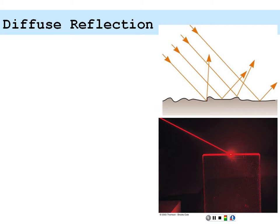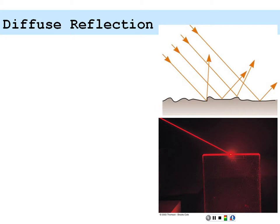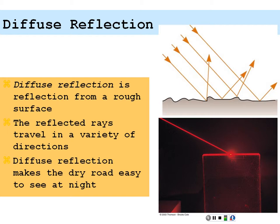If the surface is not smooth — it's kind of rough — the rays come in and reflect, but because of the rough surface the reflected rays go off in all directions, so they're not parallel when they come off. Most likely those rays can possibly make it to your eye. Diffuse reflection is from a rough surface where the reflected rays travel in a variety of directions, and this kind of makes things easier to see. On a dry road with diffuse reflection, light goes off in all directions and some of it makes it to your eye — as opposed to specular reflection off a wet road, where the light could reflect off in some direction, never make it to your eye, and hence you can't see the road.